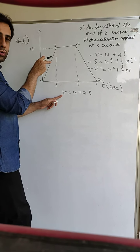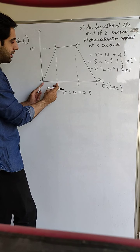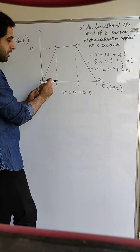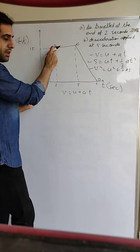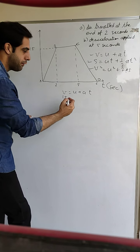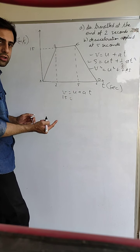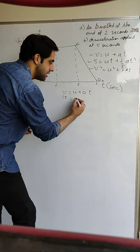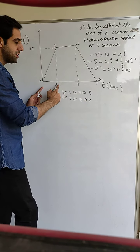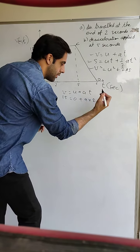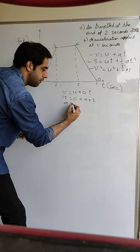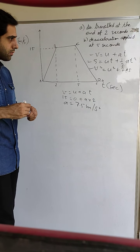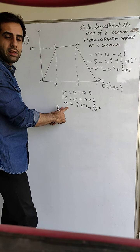Here, v is the final velocity at two seconds — the velocity at point B is 15 meters per second. u is the initial velocity — the body started from zero, so u = 0. Time taken is two seconds. Solving: 15 = 0 + a × 2, so acceleration is 7.5 meters per second squared.